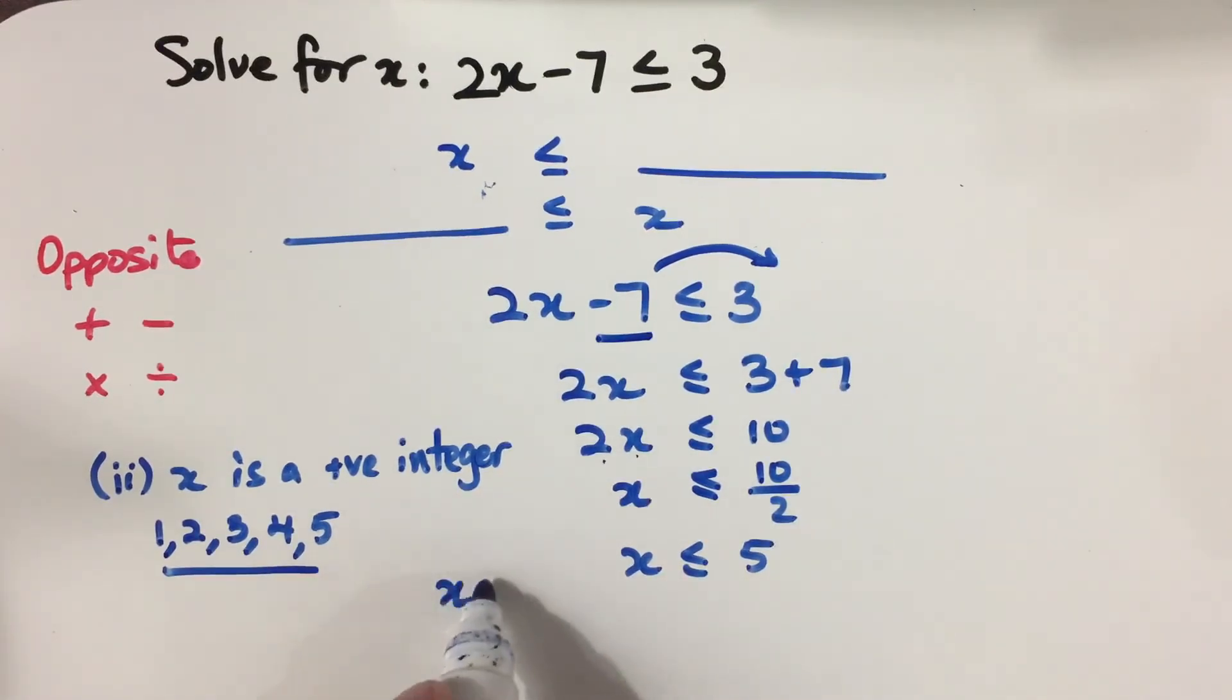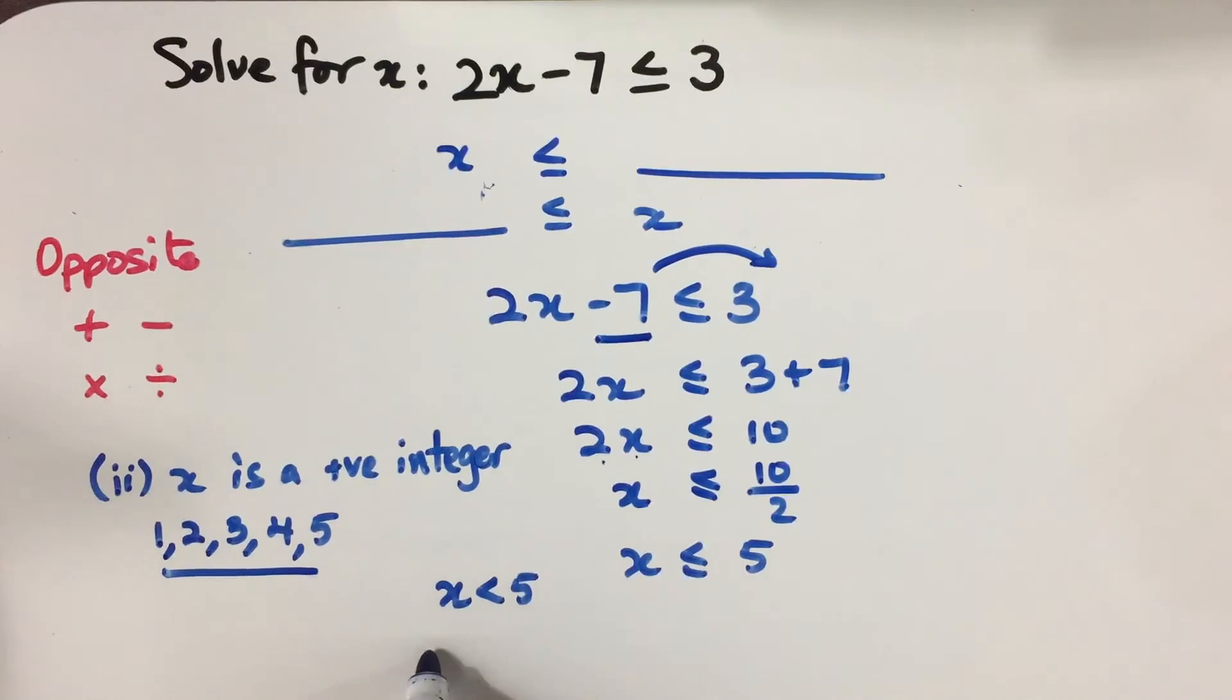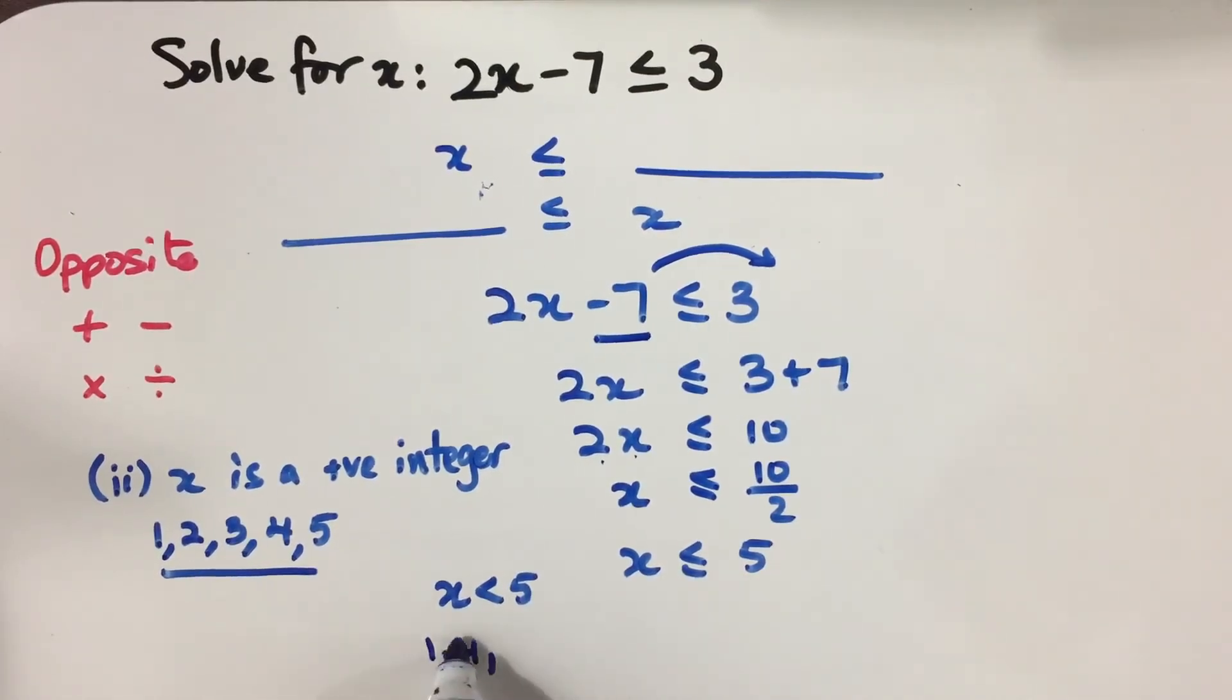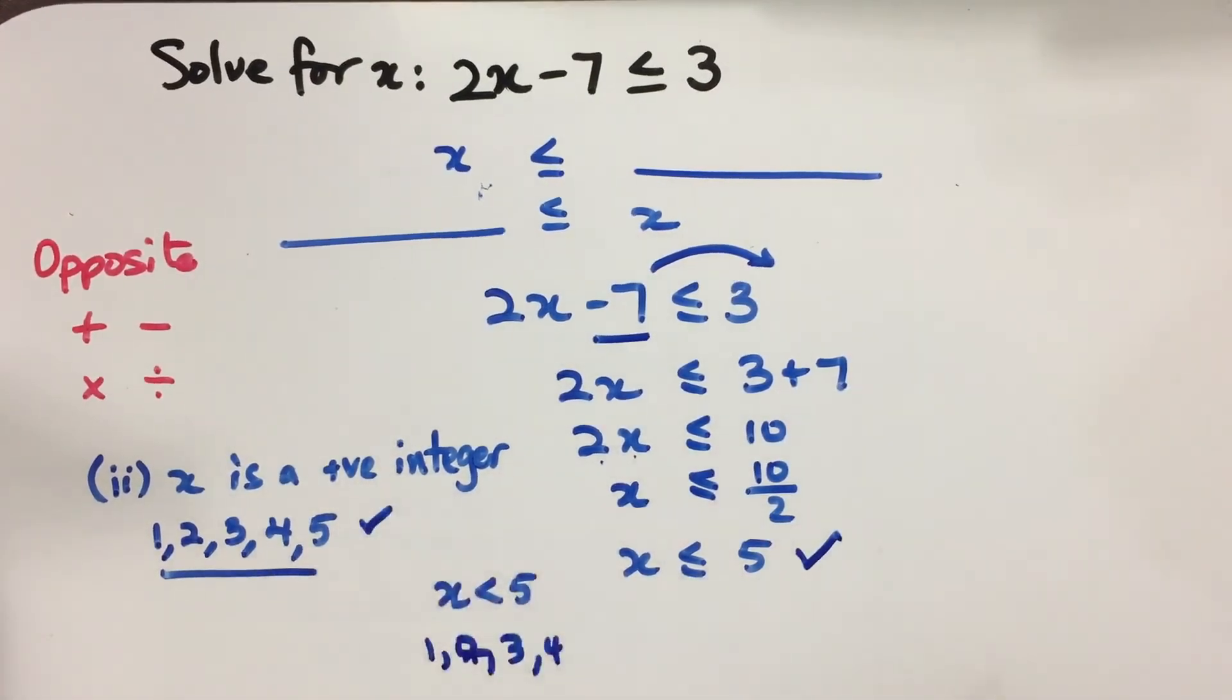If the answer was x less than 5, then the list of values for x would be 1, 2, 3, and 4, not including 5. But this is your answer, and then this is your answer for part 2.